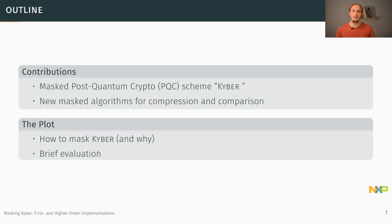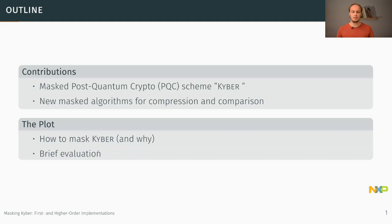In our work we applied the masking countermeasure to the post-quantum crypto scheme Kyber. Kyber is one of the finalists in the ongoing NIST competition and might be selected as one of the standard post-quantum crypto schemes for the next few decades, so it might make sense to have a look at whether we can mask and protect it against side-channel attacks. In doing so, we not only masked the full post-quantum scheme but also had to come up with two new algorithms to mask the algorithms used in Kyber for the compression and the comparison. I will detail how we masked Kyber, why we did it, and our evaluation details.